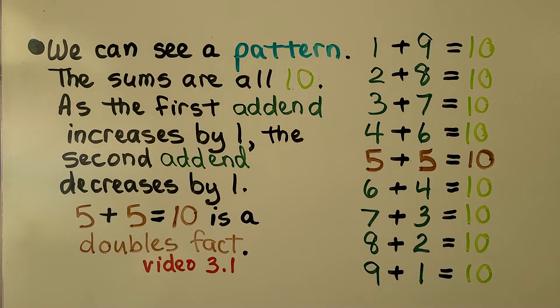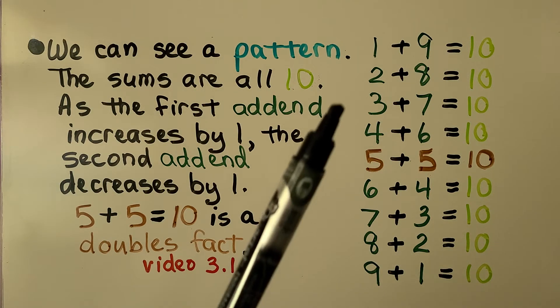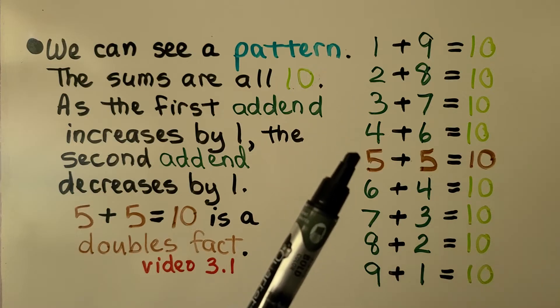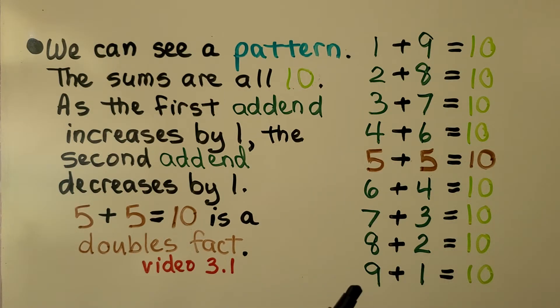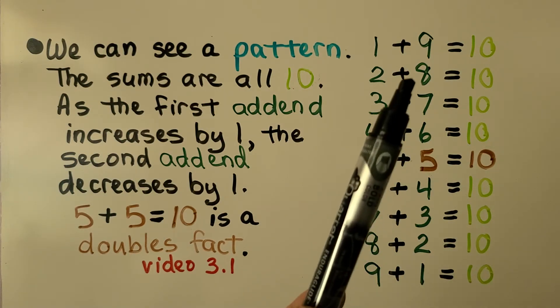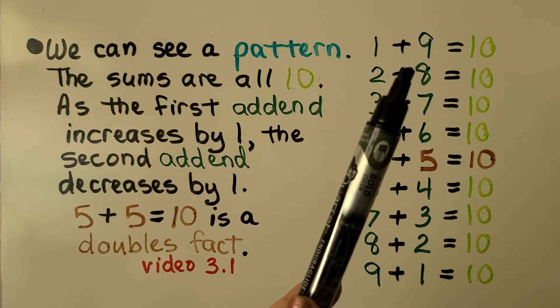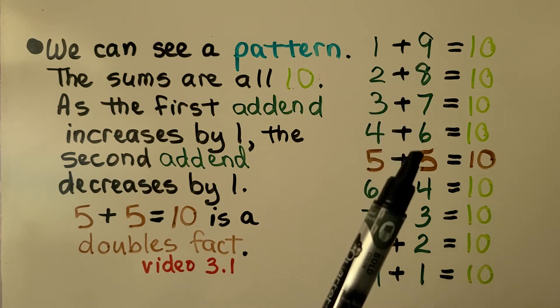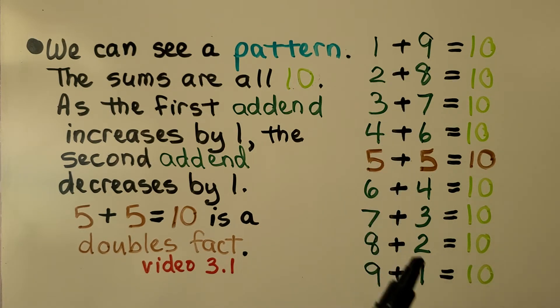So we can see the add-ends are going 1, 2, 3, 4, 5, 6, 7, 8, 9 — they're increasing. And the second add-end is going 9, 8, 7, 6, 5, 4, 3, 2, 1.